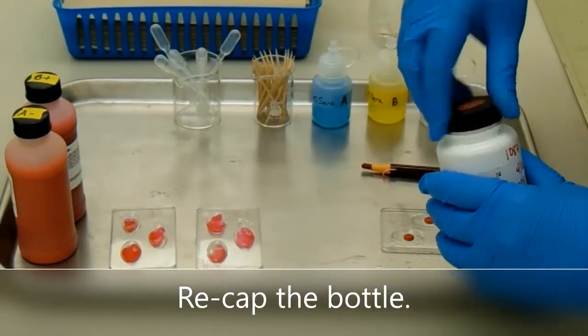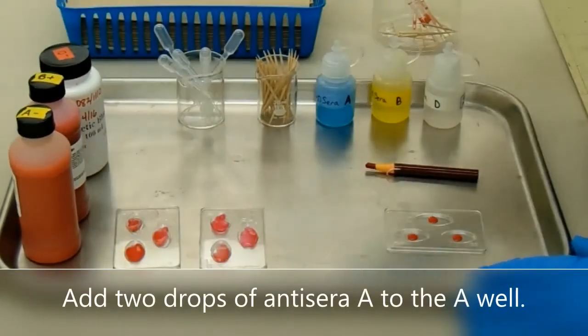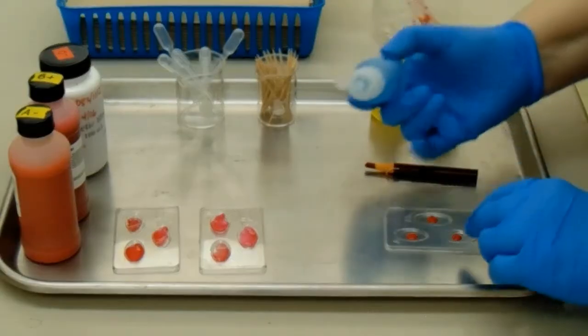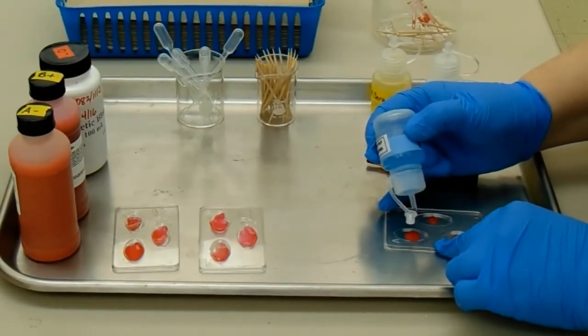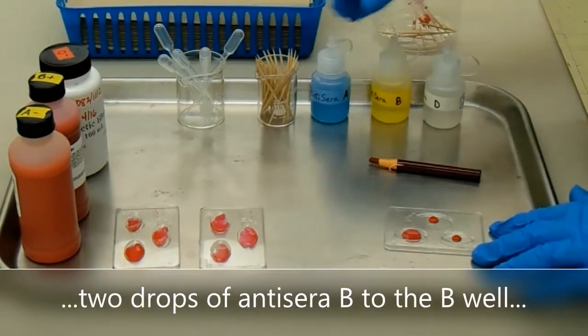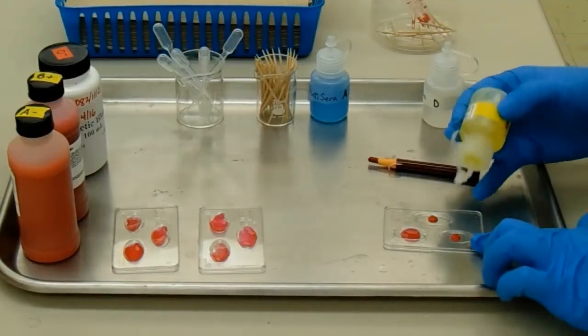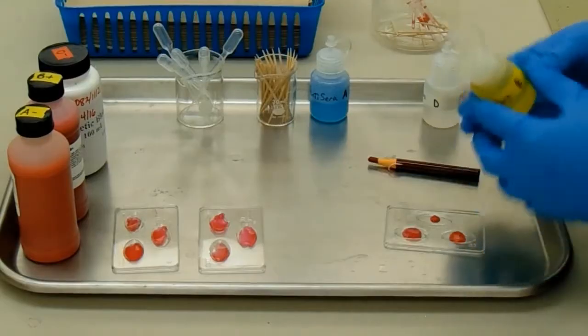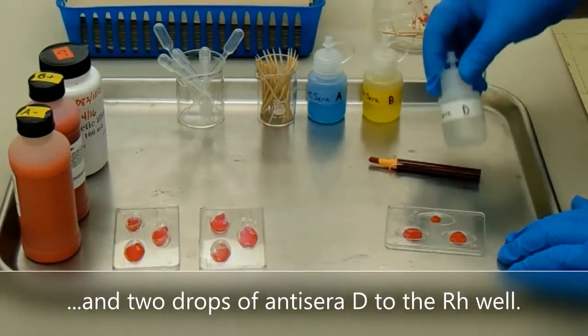Put a small amount of blood into each well. Recap the bottle. Add two drops of antisera A to the A well. Add two drops of antisera B to the B well. Add two drops of antisera D to the RH well.